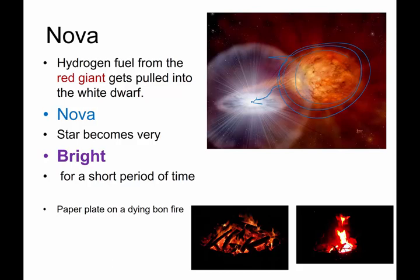When that huge collection of hydrogen from the outer reaches of the red giant gets gravitationally attracted to the white dwarf, it's kind of like throwing a paper plate onto a burning bonfire. The bonfire is dying. It's the end of the evening. You've been sitting around it for hours and you go to clean up at the end of the bonfire and you throw some stuff on the bonfire like a paper plate.